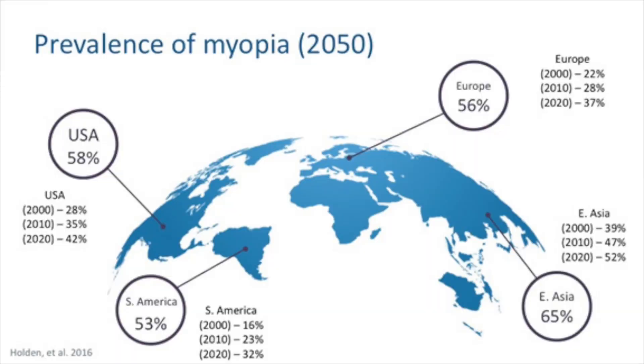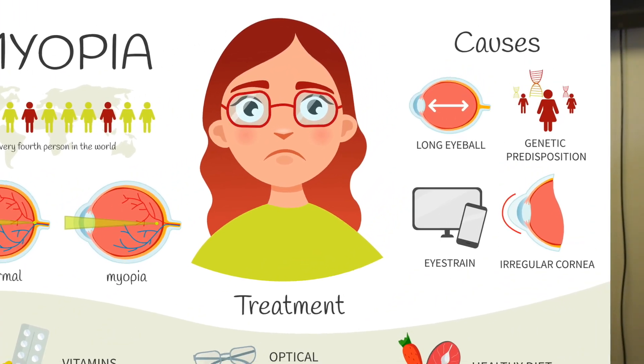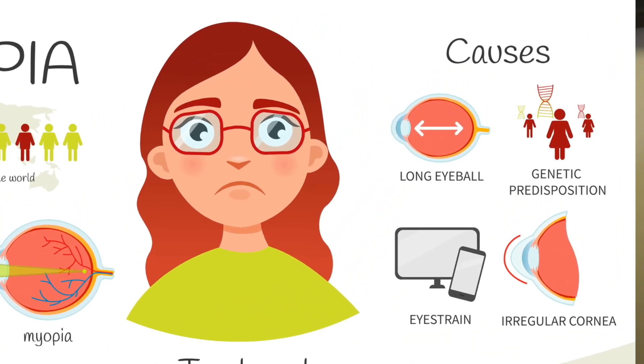Child myopia or nearsightedness is a growing issue in the world. Worldwide, the rate of myopia is increasing incredibly and it's a real concern for the World Health Organization. So even though there are lots of kids out there wearing glasses, being myopic or nearsighted is not a normal condition.